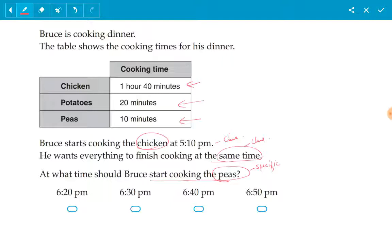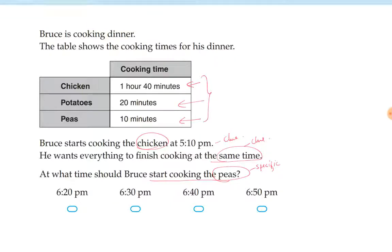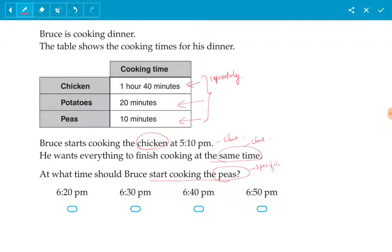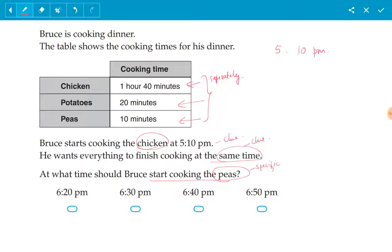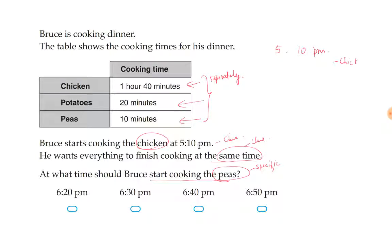The thing we have to remember is Bruce is cooking all of these items separately. The first clue that has been given is that Bruce started cooking the chicken at 5:10 PM. If you start cooking the chicken, it has taken him 1 hour and 40 minutes.